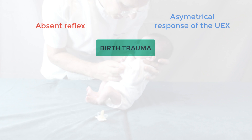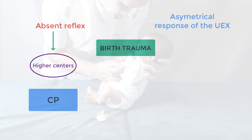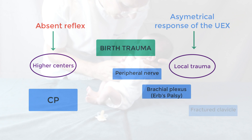An absent Moro reflex is normally a result of trauma to the higher centers, such as in the case of cerebral palsy. An asymmetrical Moro reflex, on the other hand, is normally a result of local trauma either to a peripheral nerve, the brachial plexus, or as a result of fracture to the clavicle.